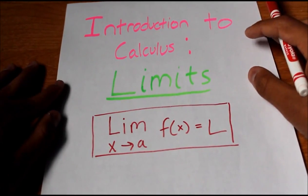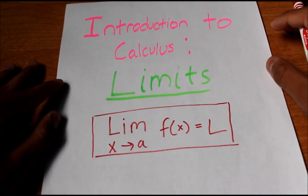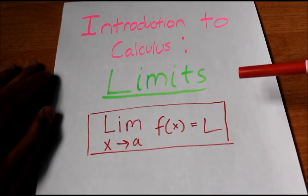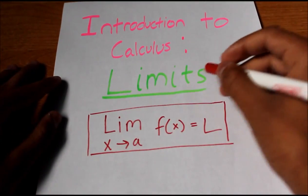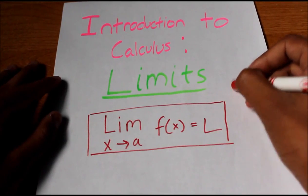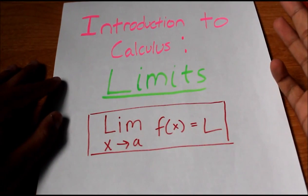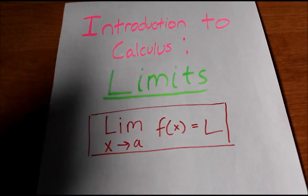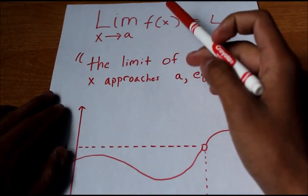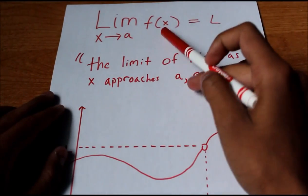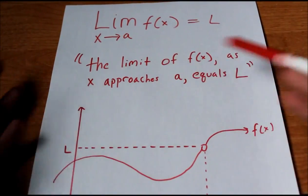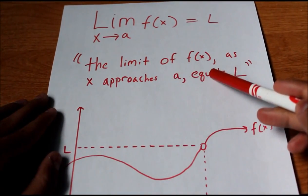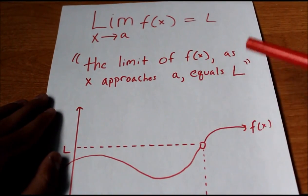So what is a limit? Here's a definition of a limit. We'll have some function f of x and we're going to take the limit as x approaches some value a. And when we do that, we'll get some value out, l. The limit as x approaches a of f of x equals l.